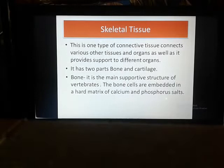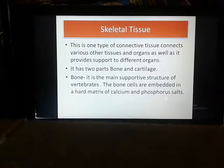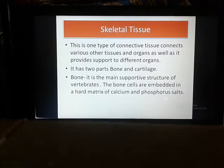So what is bone? Bone is the main supportive structure of vertebrates. The bone cells are embedded in a hard matrix of calcium and phosphorus. The matrix is deposited in the form of concentric layers around a central canal, and the bone cells occupy small spaces that accumulate calcium and phosphorus salts.